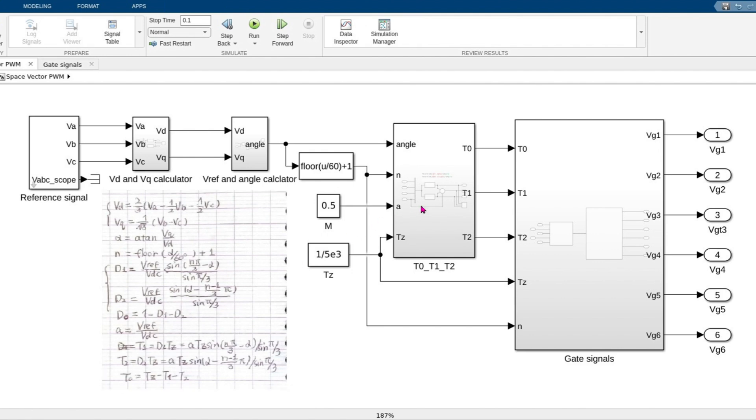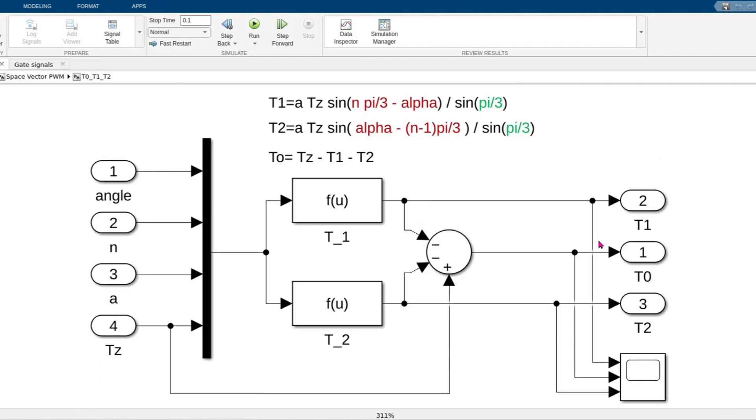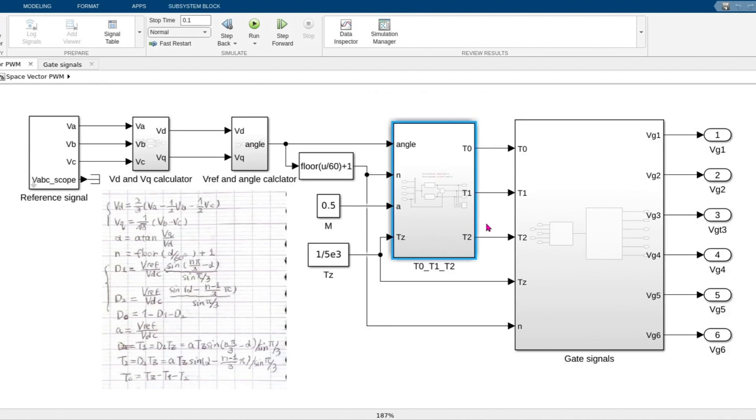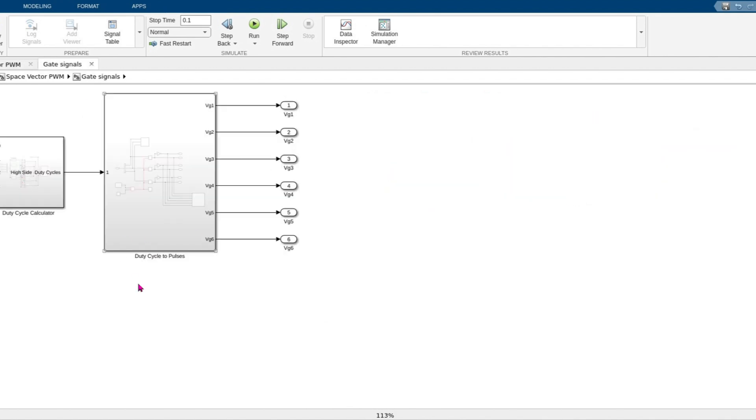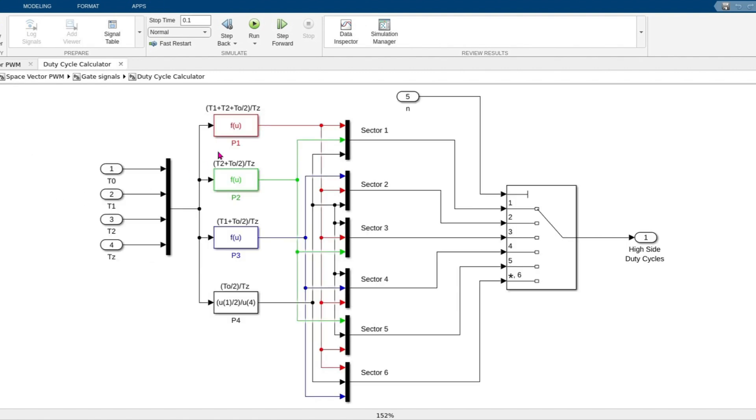To generate the PWM, we need to synthesize these times according to sector. Sector can be one, two, three, four, five, six. If a sector is one, we are in the first sector. So the switch S1 for the phase A should be on for T1, T2 and half T0. And if we are in sector 2, then the S1 should be on only for T2 and half T0.